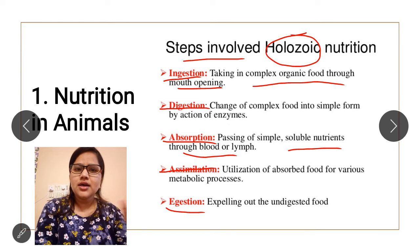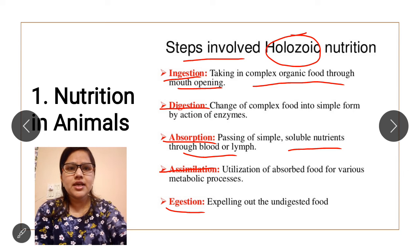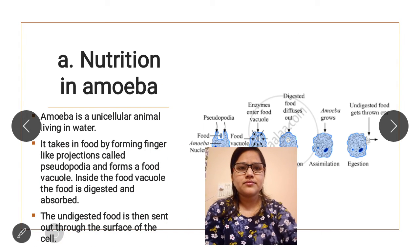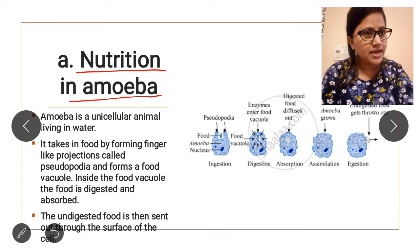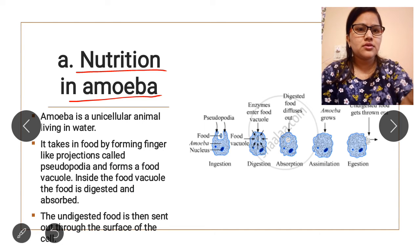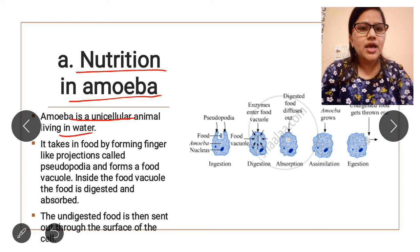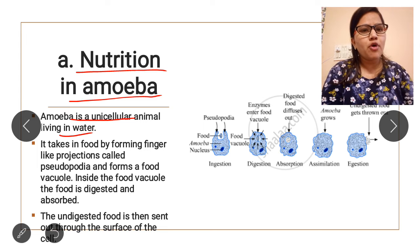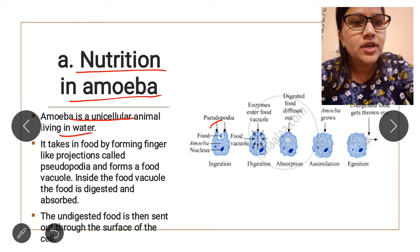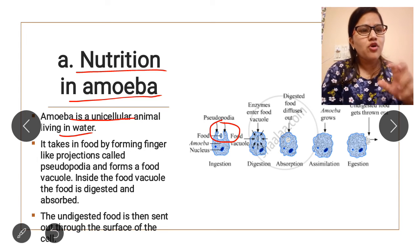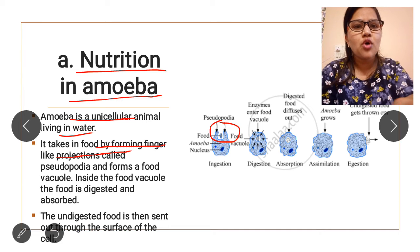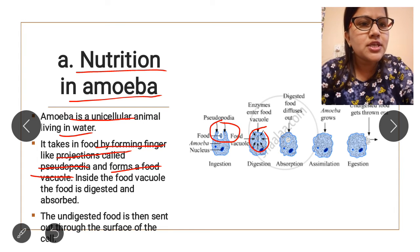Now we will see nutrition in amoeba. Amoeba is a unicellular organism that lives in water. It takes in food by forming finger-like projections known as pseudopodia. 'Pseudo' means false and 'odia' means leg, so these false legs are called pseudopodia. Amoeba takes in food by forming these finger-like projections called pseudopodia.